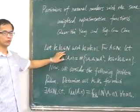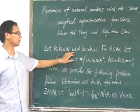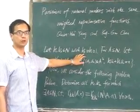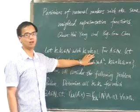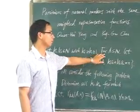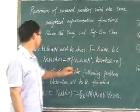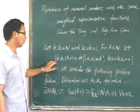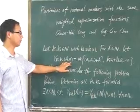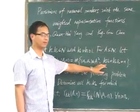Let k1, k2 be two integers with k2 greater than or equal to k1 greater than or equal to 1. Now, for a subset A of N, let rk1,k2(A,N) be the solutions of this equation.